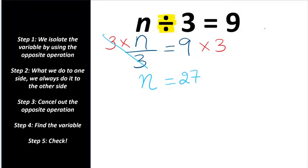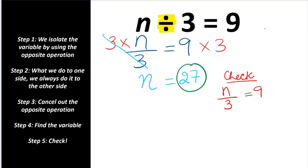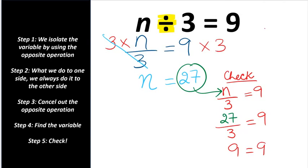Let's check our work. Let's copy down the equation and substitute 27 inside it. So 27 divided by 3 is 9, equals 9. Right side equals the left side. Give yourself a check mark.